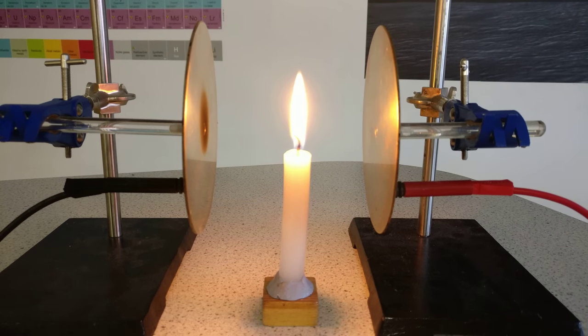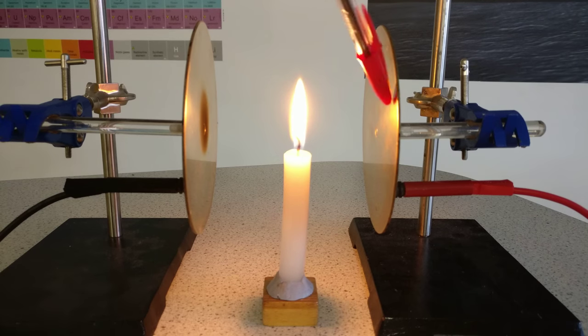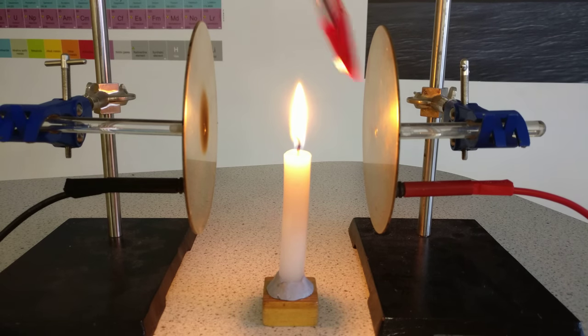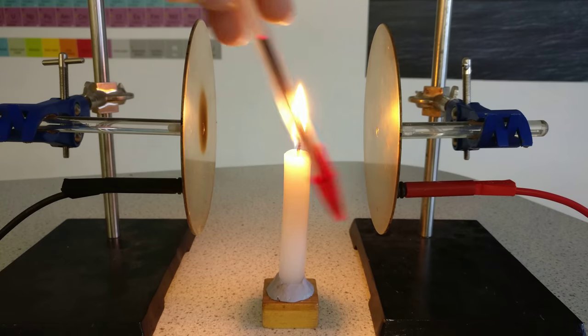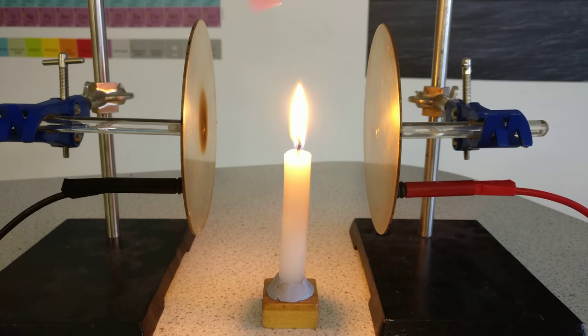Now, if I put a potential difference across here, there'll be a region of space where there is an electric field with field lines going across like so. And the field lines go in the direction that a positive test charge would move. So it's going from this plate to this plate because the positive is pushed this way. And the candle flame is there.